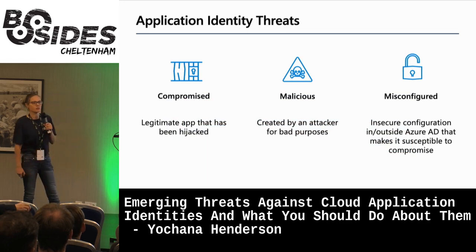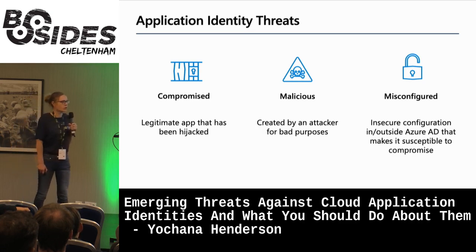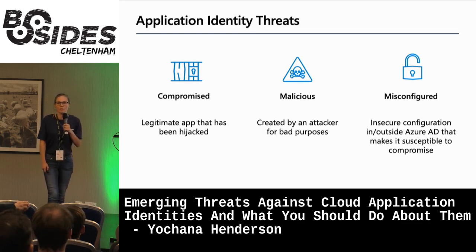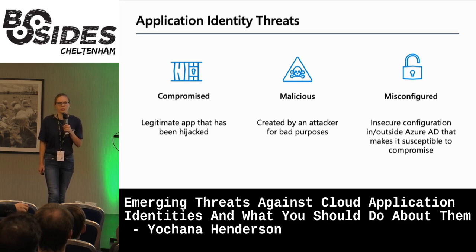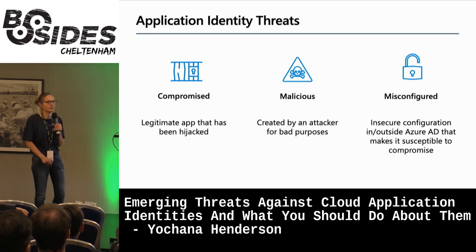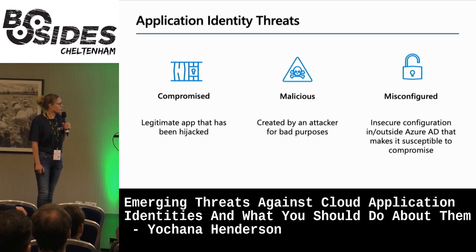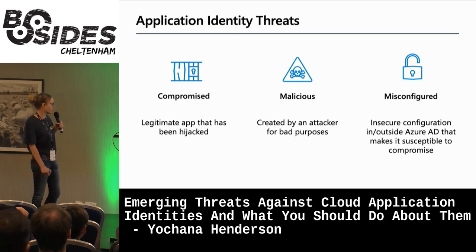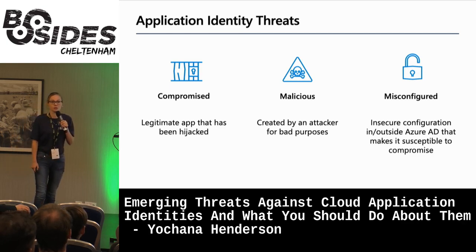48% of compromised instances are attributed to no password or weak passwords for user accounts or API connections. There are a number of different buckets we put these attacks into: compromised application identity - a legitimate application that has been compromised, where an attacker adds a credential; malicious applications - purely for malicious intent; and misconfigured applications, which includes putting credentials in public GitHub or using the wrong URI.